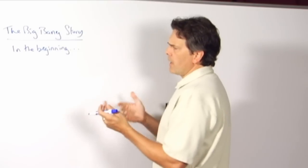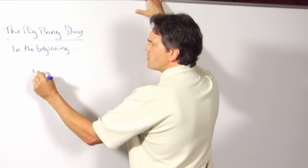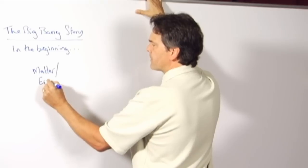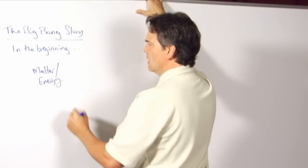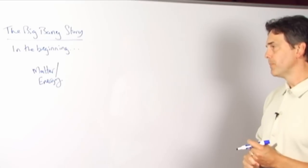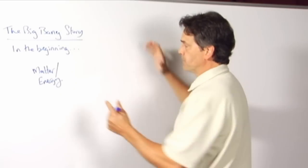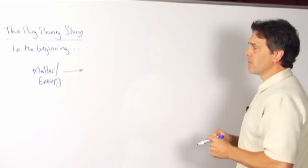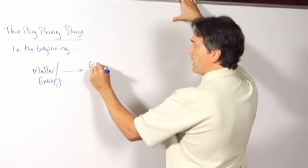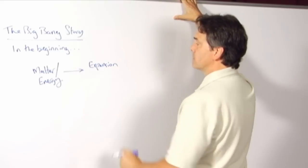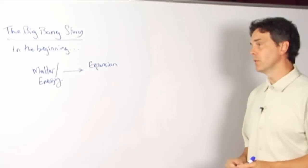So, all right, at the beginning, then, of this iteration of the story, what we have is all of the matter and energy of the universe, compressed into a singularity, or in a singularity state, and then it went bang.